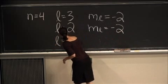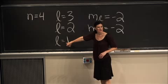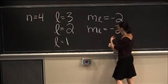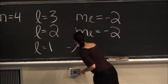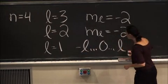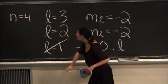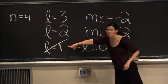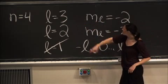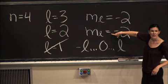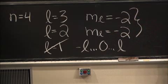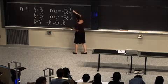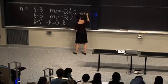What about l equals 1? We can't have that, because if l equals 1 we cannot have m sub l equal to negative 2 — the magnetic quantum number only goes from negative l to positive l. So it's not possible to have l equals 1 given these stipulations, meaning we can only have two different values of l. An orbital is completely described by three quantum numbers, so we end up having two orbitals here.